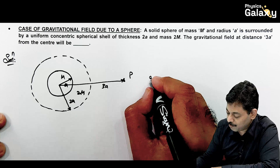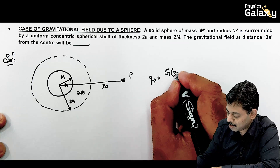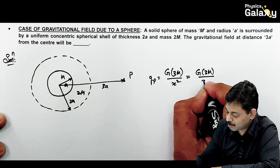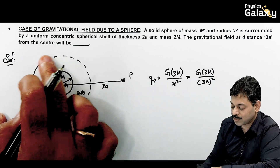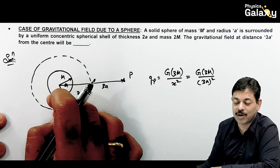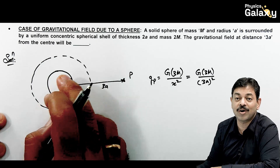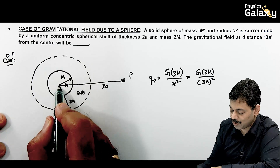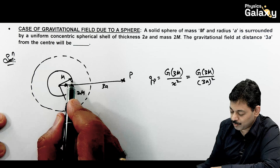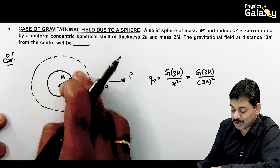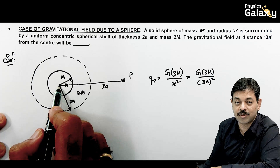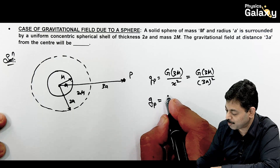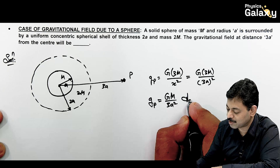At point P located at distance 3a, the gravitational field Gₚ = G × (total mass) / (distance)². The total mass is 3m and distance is 3a, so Gₚ = G(3m)/(3a)². Since all the mass — m within radius a and 2m within the shell from a to 3a — is uniformly and radially distributed, for an outer point we consider it all concentrated at the center. The result is Gm/(3a²).